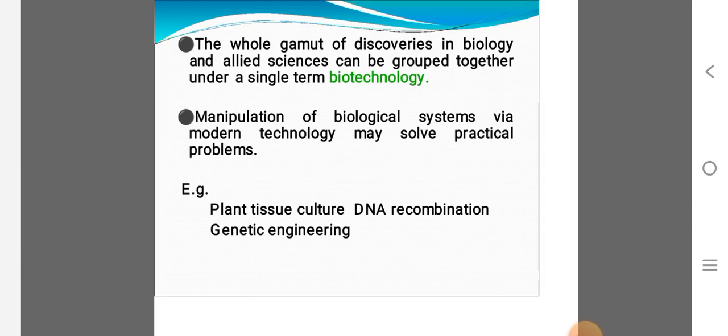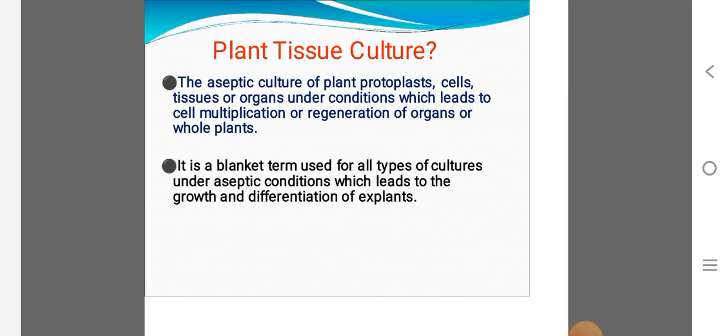What is meant by plant tissue culture? The aseptic culture of plant protoplasts, cells, tissues or organs under conditions which leads to cell multiplication or regeneration of organs or whole cells. Here aseptic culture means a good culture without any infectious materials.